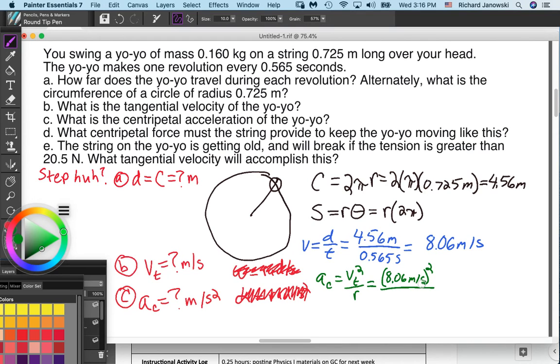And this gets squared divided by our radius. What is the radius? The radius is not our answer for part A. That's the distance the whole thing goes around. Our radius is this number up here, 0.725 meters. So ask your calculator what that is. You're going to end up with 89.7 meters per second squared.